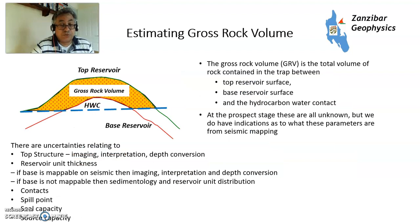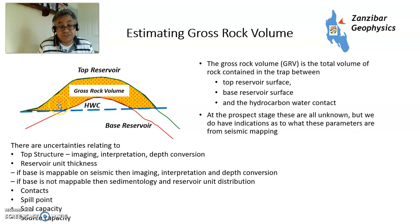Gross rock volume is the volume of rock above a potential contact. You have the top reservoir surface, a base reservoir surface if you have one; alternatively you may use a variable thickness if you can't map the base reservoir surface seismically, and then a hydrocarbon-water contact. For a discovery where you know the hydrocarbon-water contact, that uncertainty is eliminated. For prospects, you don't know where the contact is or whether you actually have one, so your model ranges them, and once you put all of that in you will come up with a gross rock volume.